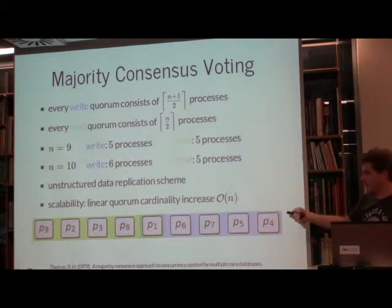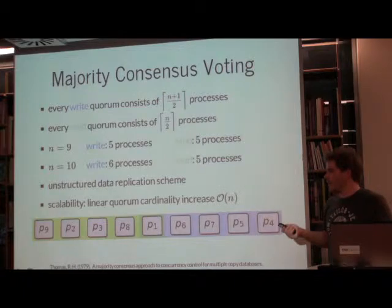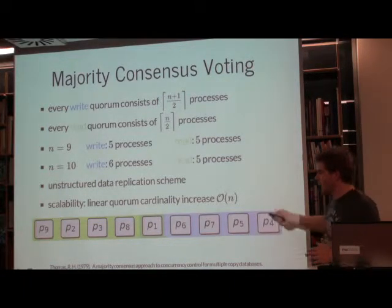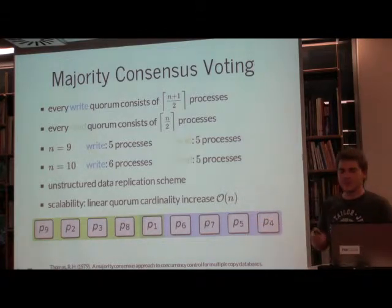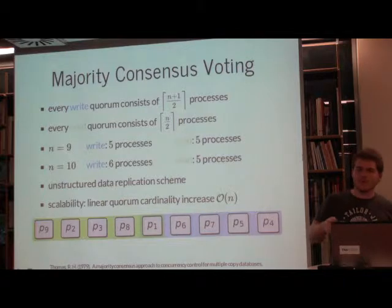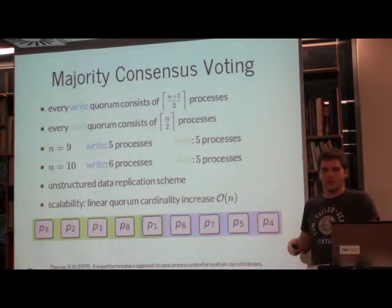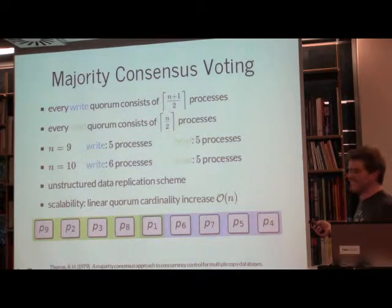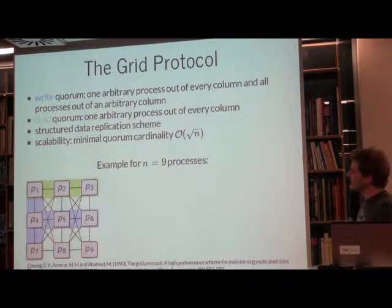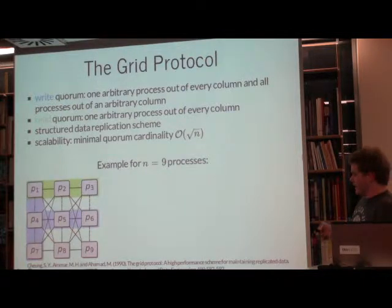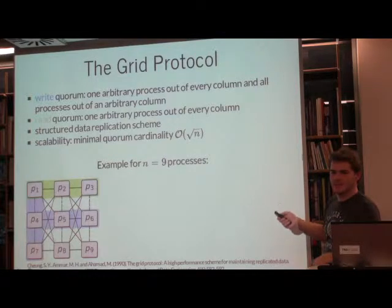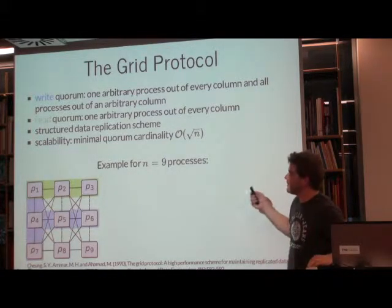Regarding scalability: if we add two more processes to our distributed system, each quorum grows by one more process. We want the lowest number of processes possible in each quorum. There are many data replication schemes; the next one I want to present is the grid protocol.